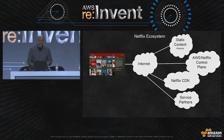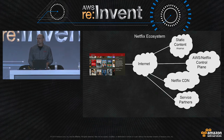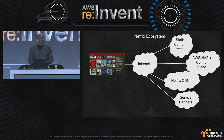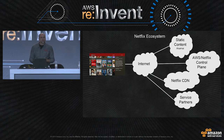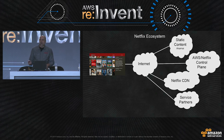The ecosystem at a very high level of abstraction looks something like this. We have many, many devices out there in the world — customers' homes, in their hands as they're moving around with mobile devices — connecting over the internet to a set of clouds. The one we're going to focus on today is what we call our AWS Netflix control plane. This is where our distributed systems live that provide the majority of the customer experience other than playback. We also have our own purpose-built CDN called Open Connect that serves video directly to customers, plus partners for static content like boxshots, CSS, and JavaScript, and service partners like Xbox Live and PSN.